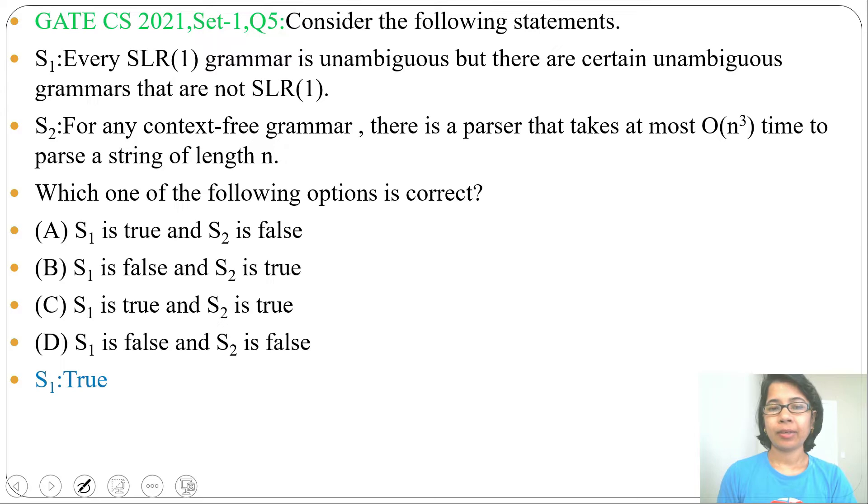And in top-down parsing and bottom-up parsing, time complexity is O(n³). So for any context-free grammar there is a parser, it might be top-down or bottom-up. The time complexity is O(n³). Hence, Statement 2 is also true.